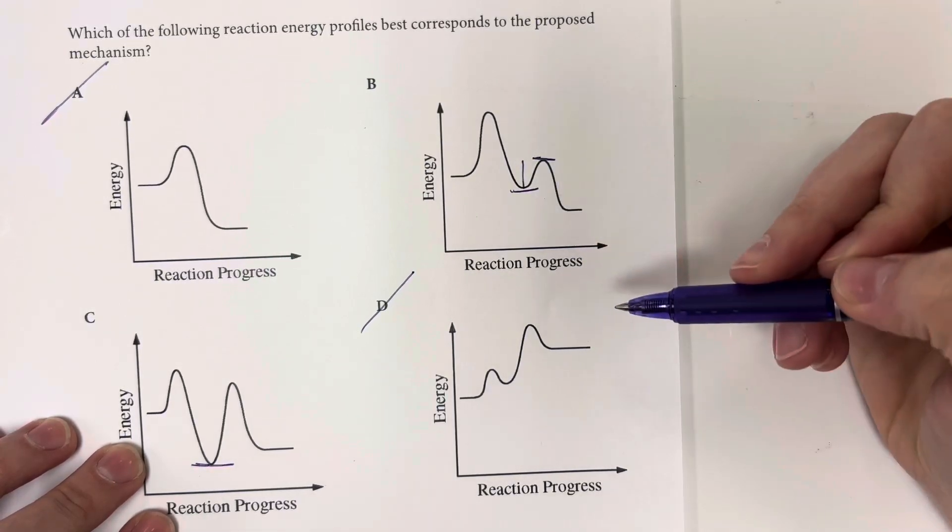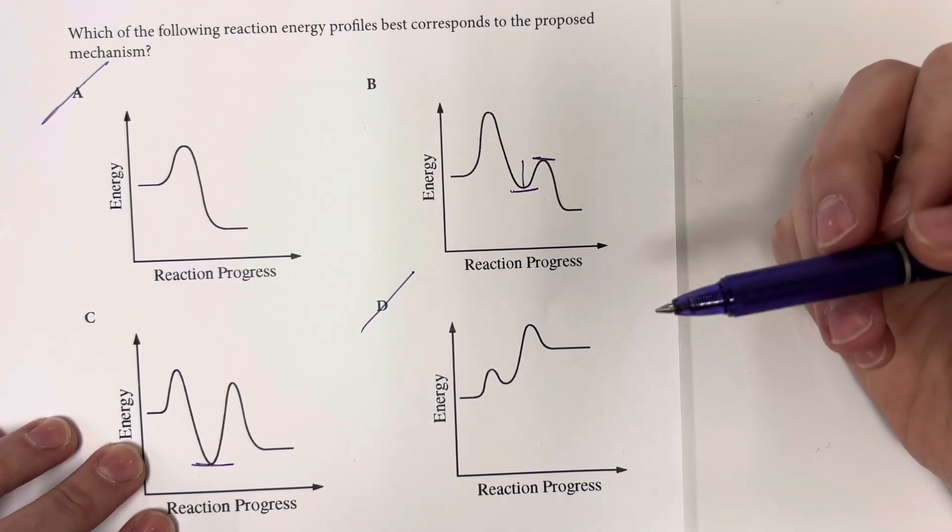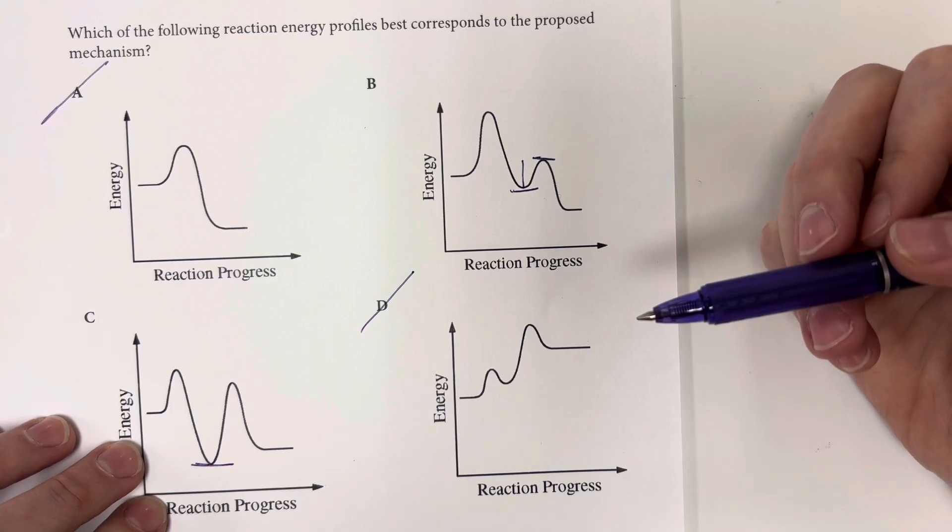Slower reactions have a higher activation energy. They require a lot more to go correct in order for the reaction to occur.